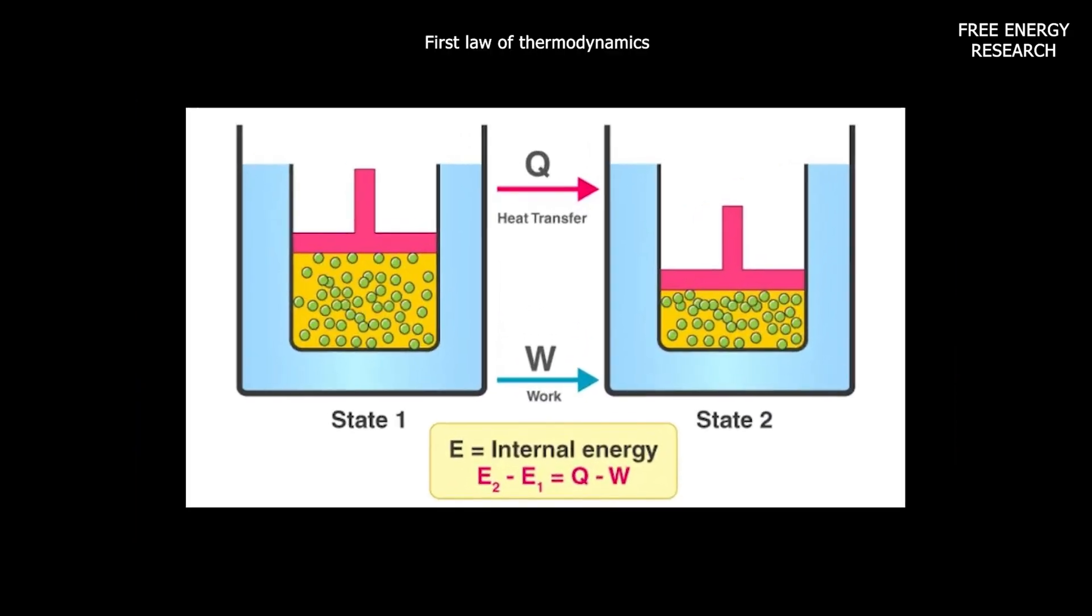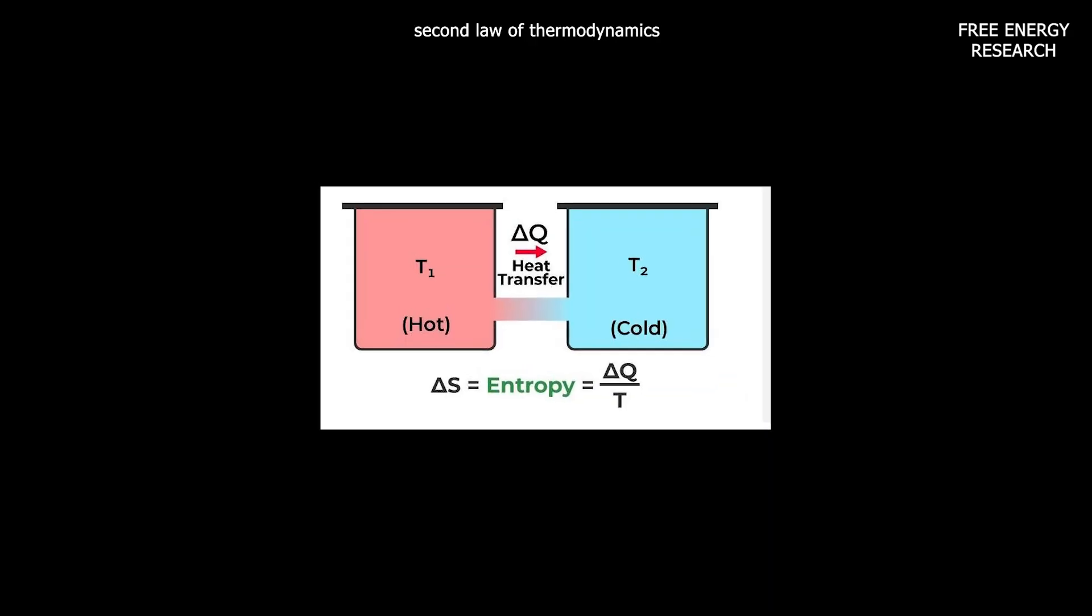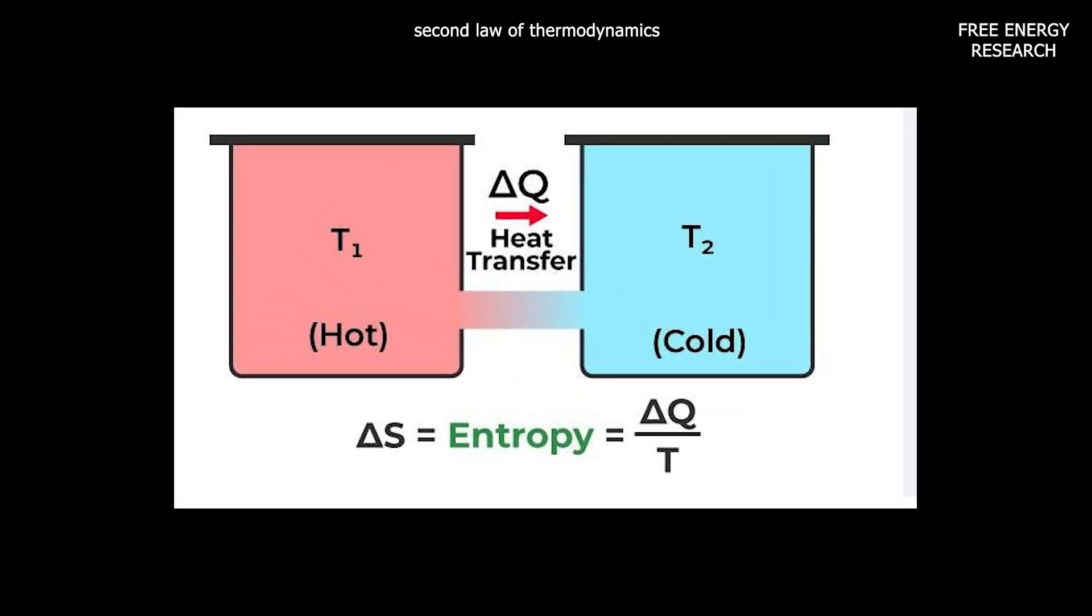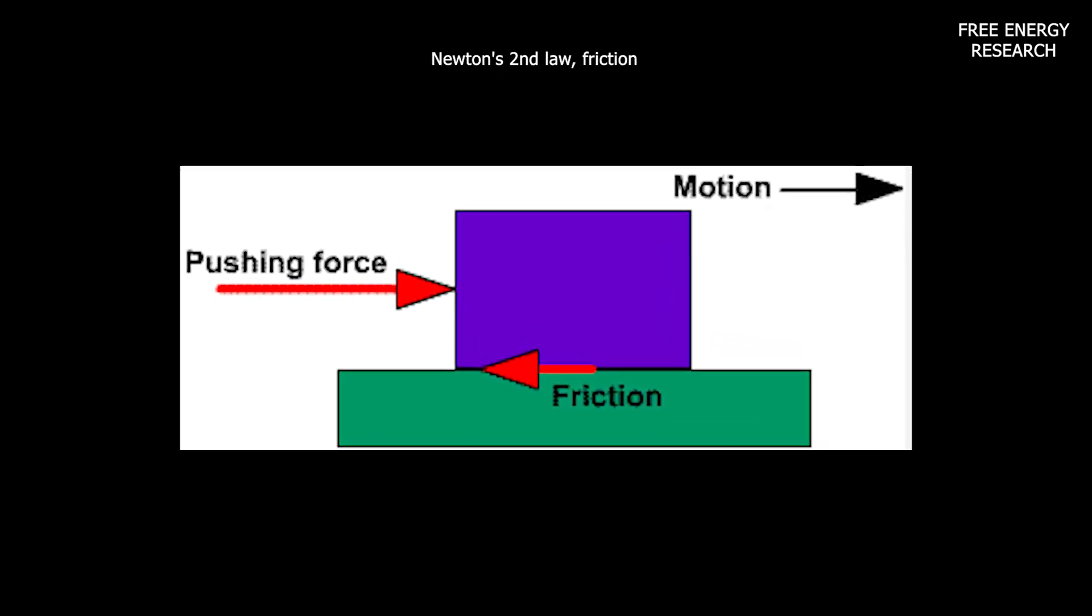The first law of thermodynamics is a version of the law of conservation of energy. The second law can be phrased in several different ways, the most intuitive of which is that heat flows spontaneously from hotter to colder places. Relevant here is that the law observes that in every macroscopic process, there is friction or something close to it.